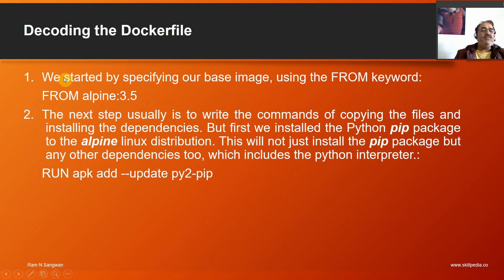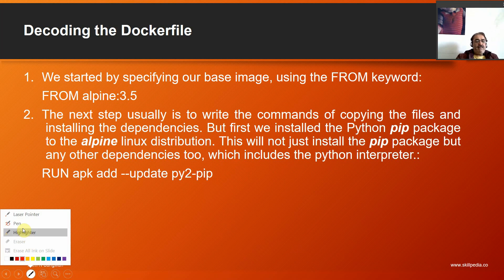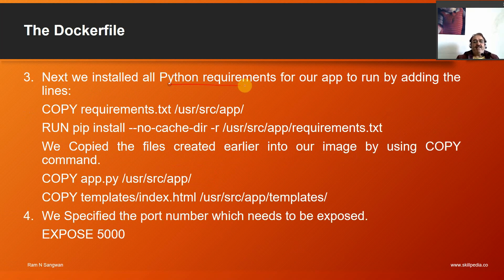Let's decode the Dockerfile. We start by specifying the base image using the FROM keyword: FROM alpine:3.5. The next step is installing python and pip onto the Alpine Linux distribution — this installs not just pip but also the Python interpreter and other dependencies — using the command RUN apk add python2 python-pip. We then install all Python requirements by copying requirements.txt to /usr/src/app in the container and running pip install --no-cache-dir -r.